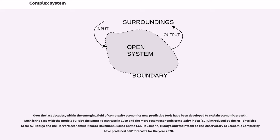Over the last decades, within the emerging field of complexity economics new predictive tools have been developed to explain economic growth, such as the case with the models built by the Santa Fe Institute in 1989 and the more recent Economic Complexity Index, ECI, introduced by the MIT physicist Cesar A. Hidalgo and the Harvard economist Ricardo Hausmann. Based on the ECI, Hidalgo and their team of the Observatory of Economic Complexity have produced GDP forecasts for the year 2020.